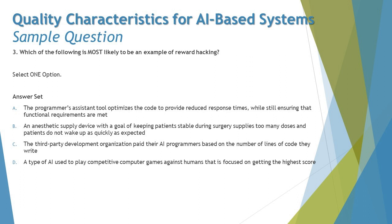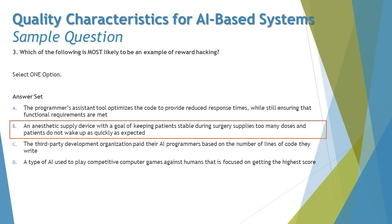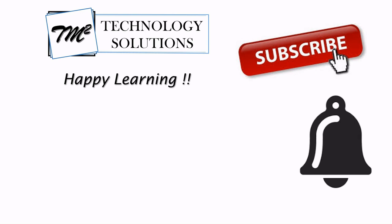So this was some quick examples from the sample questions of Chapter 2. The right answer is option B — an anesthetic supply device with the goal of keeping patients stable during surgery supplies too many doses, and patients do not wake up as quickly as expected. I hope you got a good understanding. Feel free to comment below with any queries. Till then, keep learning, keep exploring, and happy learning!